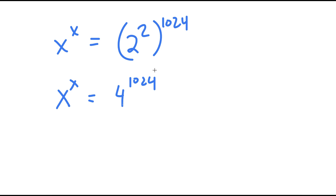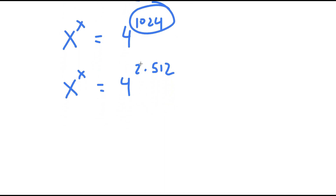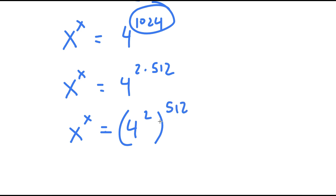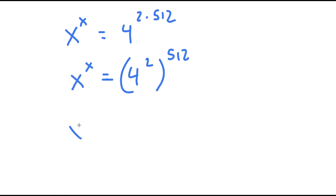Now I'm going to repeat what I just did again. So 1024 equals 2 times 512, so now I have x to the power of x is equal to 4 to the power of 2 times 512. This is equal to x to the power of x is equal to 4 to the power of 2 to the power of 512. 4 to the power of 2 is 16, so I have x to the power of x is equal to 16 to the power of 512.